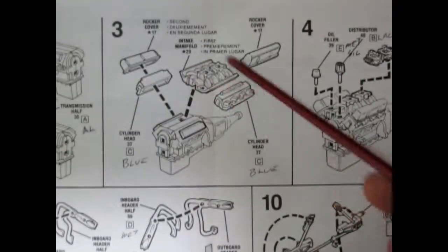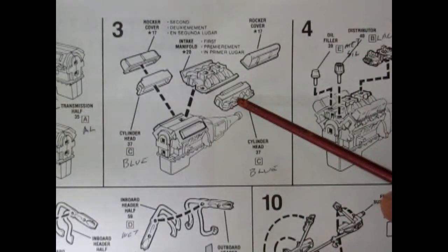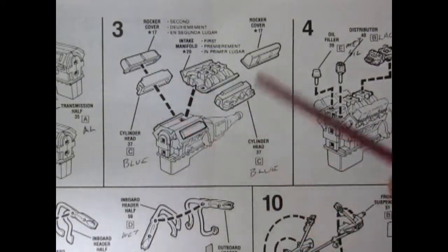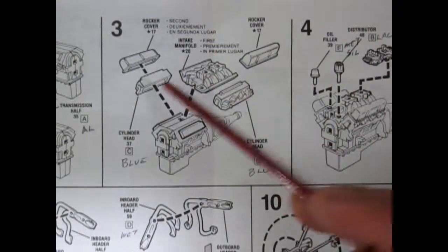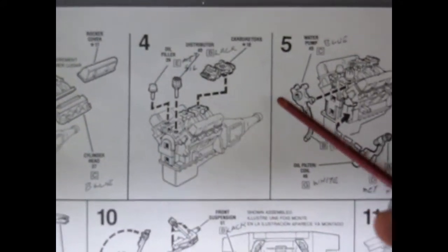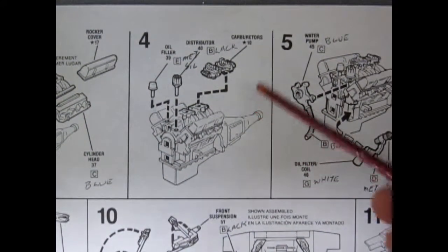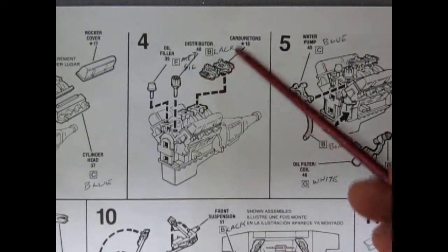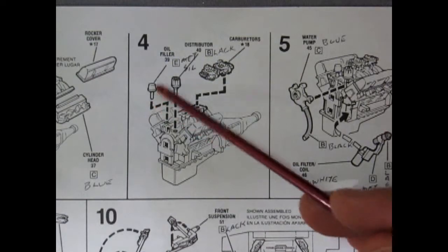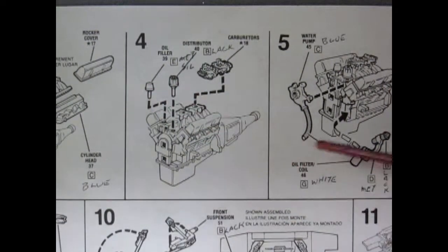Now we get into the intake manifold, your right and left valves, the valve covers or rocker covers. These are your cylinder heads in there. Moving over to number four, we get the nice carburetors, two four barrels, the distributor and an oil filler with the cap on the top.